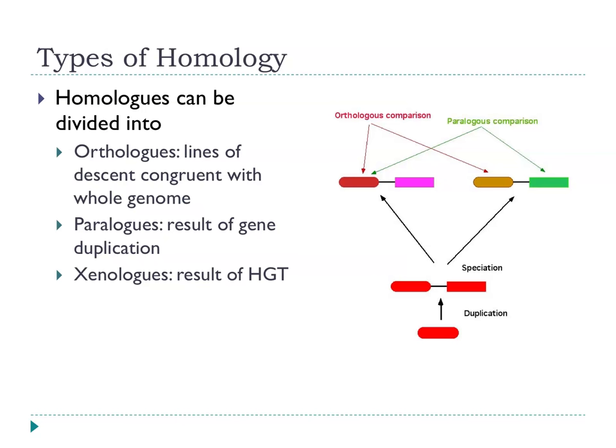When looking at gene homology, we have two key kinds: orthologues and paralogues. Orthologues are genes following orderly lines of descent in common with their genomes — after a speciation event producing E. coli on one lineage and Salmonella on the other, all genes common to the two show orthology. Paralogues arise where there's a gene duplication within one lineage — for example, a glucose transporter duplicates and one copy becomes specialised for maltose transport, giving two homologous genes in the same genome. Xenologues arise through horizontal gene transfer.